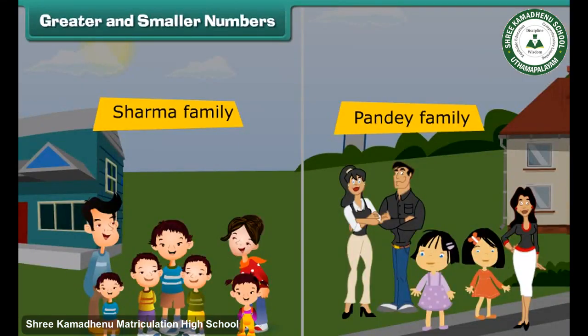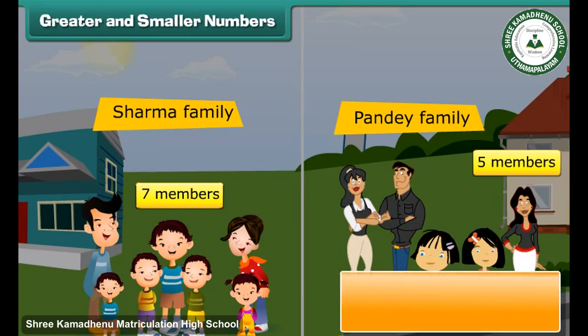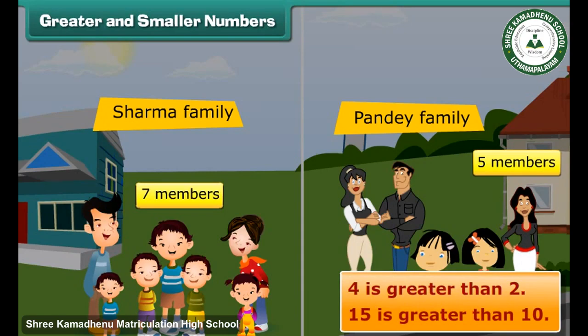Greater and smaller numbers. Recall the Sharma family with 7 and Pande family with 5 members. Sharma family has more members, which means 7 is a greater number than 5. Therefore, numbers that come later are greater than the numbers that come before. For example, 4 is greater than 2, and 15 is greater than 10.